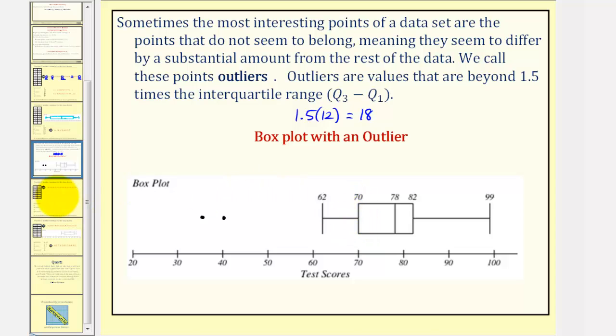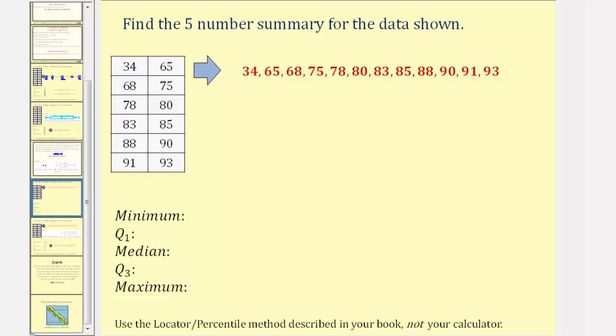So let's take a look at one more example. We want to find the five number summary of the data and then create a box plot. First, notice how I order the data from least to greatest horizontally. The minimum is 34 and the maximum is 93. We have a total of 12 data values or an even number of data values. So the median will be the average or mean of the sixth and seventh data values. Well, 80 plus 83 divided by 2 would be equal to 81.5. So the median is 81.5.